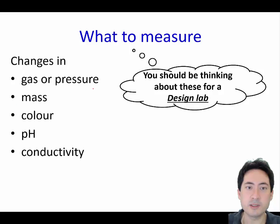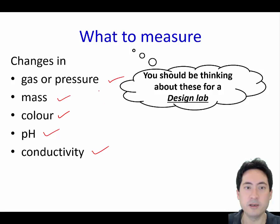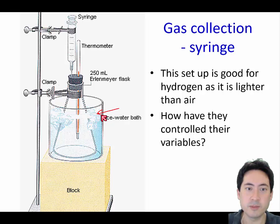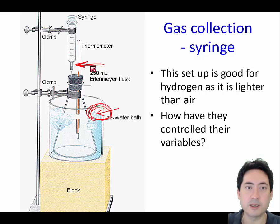The most common ways to measure a reaction are: a change in gas or pressure, a change in mass, a change in colour, a change in pH, or a change in conductivity. Use data loggers to get accurate and quick information — aim for a range of 5 values with 3 repetitions. If collecting a gas lighter than air, set up the apparatus accordingly and control temperature with a water bath. Don't just say you've controlled temperature — you need to actually measure it to confirm it's being controlled.